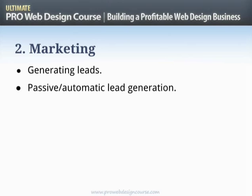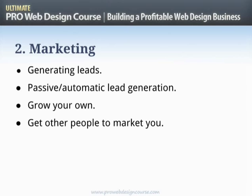We'll look at different ways of generating leads. Active methods could be cold calling or networking — getting out there shaking hands — which can work. But ideally we want to look at passive lead generation: setting up a system that reaches enough people and convinces them to get in touch, pretty much automatically. The 80/20 approach has a lot to say about that. We'll look at growing your own leads, creating a following and developing it until they get to the point where they need to hire you — with minimum possible work.